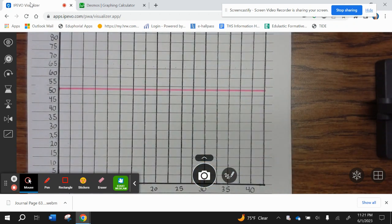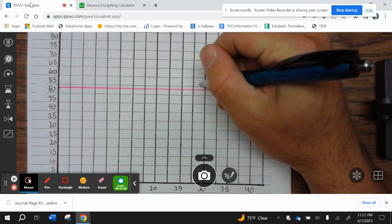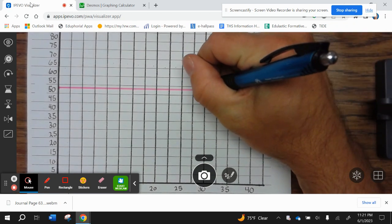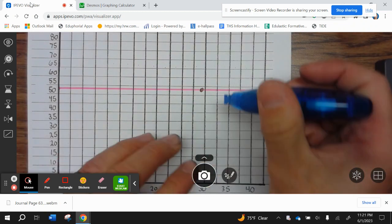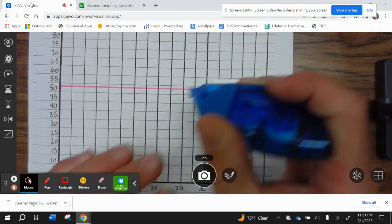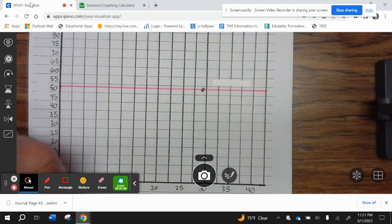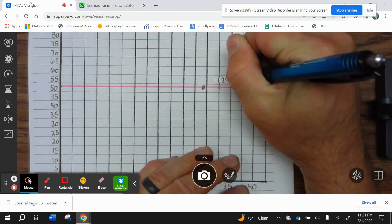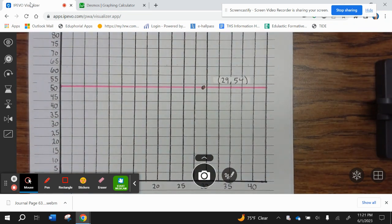Now we know our intersection is 29, 54. So 29, 54 is about right here.